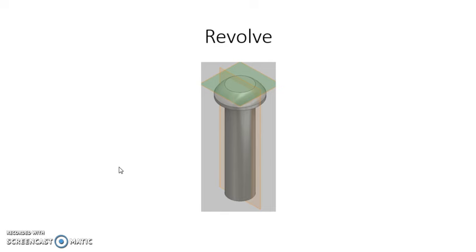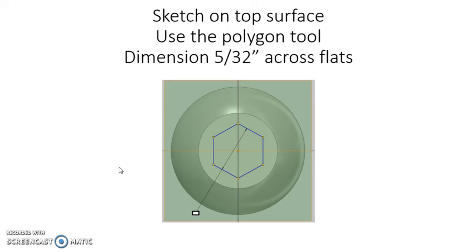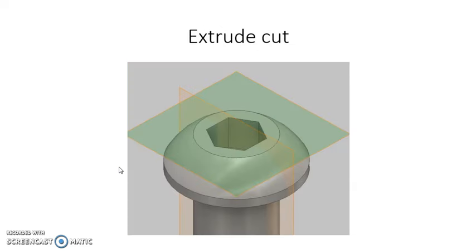After you revolve, then we're going to do a sketch on the top surface. We're going to use the Polygon tool to draw a hexagon. The hexagon needs to be dimensioned to be 5/32nds across the flats. You can see that I've dimensioned it across the flats here. You just simply need to type in the number. After you put that in, you need to extrude cut after you finish your sketch, and you'll have the top of the axle peg completed.